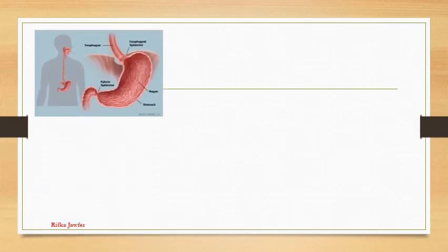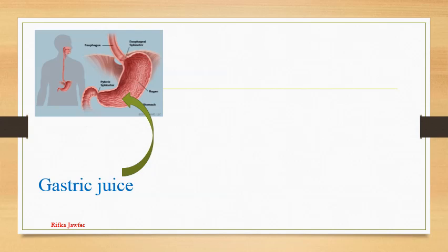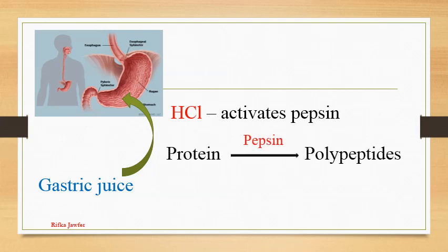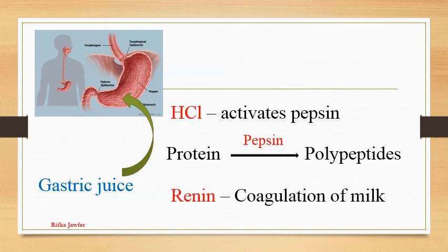Then the bolus moves to the stomach, which is a dilated sac-like organ. The bolus breaks down and mixes well into a chyme. Gastric juice is secreted in the stomach. It contains hydrochloric acid, pepsin, and renin in infants. Hydrochloric acid activates the pepsin. Pepsin converts protein to polypeptides. Renin helps in coagulation of milk in infants. Food is retained for about 3 hours in the stomach. Some water, glucose and drugs are absorbed in the stomach.